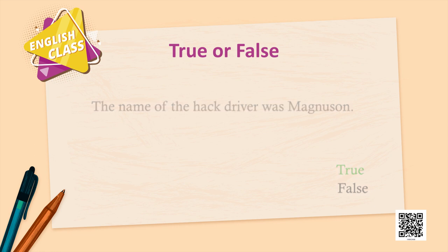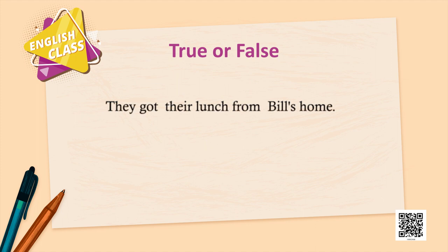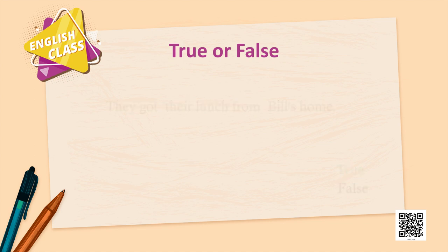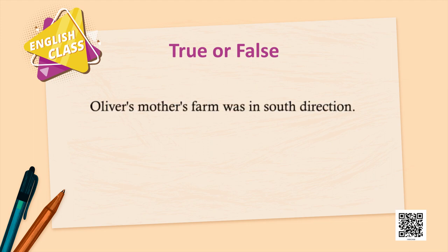To the sixth one: 'They got their lunch from Bill's home.' True or false? This is also true. Yes — he says it would be cheaper and they get lunch from Bill's home. To the seventh: 'Oliver's mother's farm was in the south direction.' False — it was in the north direction.